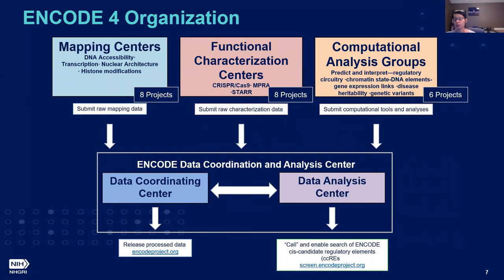We'll see things like various reporter assays and genome editing within these centers. We also have our computational analysis projects, and in this round there are six of them, where they are developing and applying new computational methods to ENCODE data to improve and interpret the catalogs of candidate functional elements. And then we have the combined efforts of the Data Coordinating Center and the Data Analysis Center — the ENCODE Data Coordination and Analysis Center.